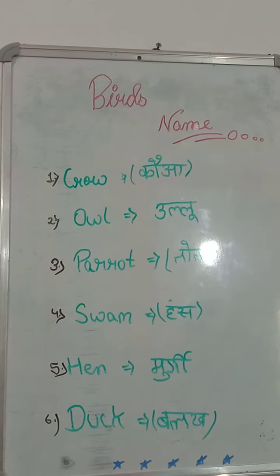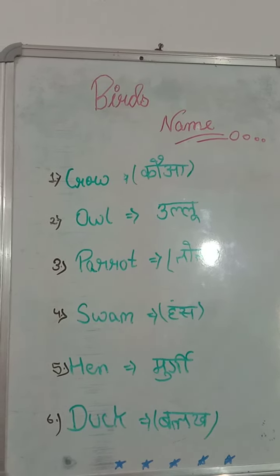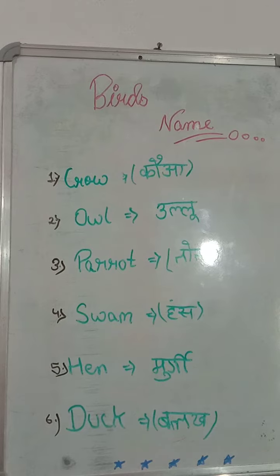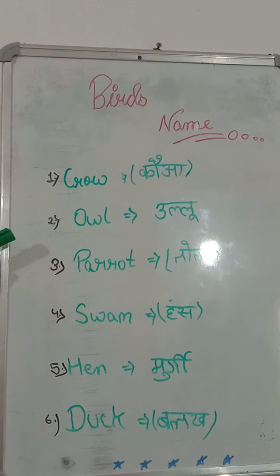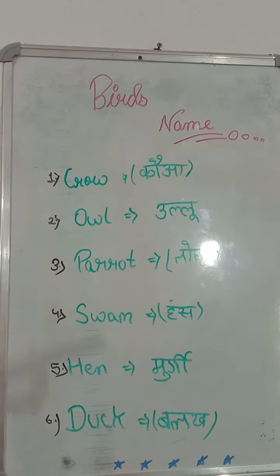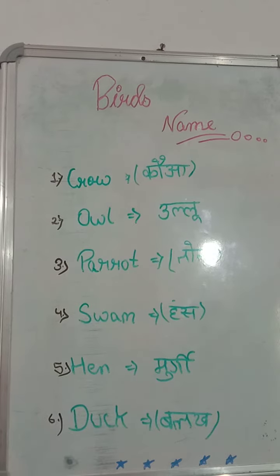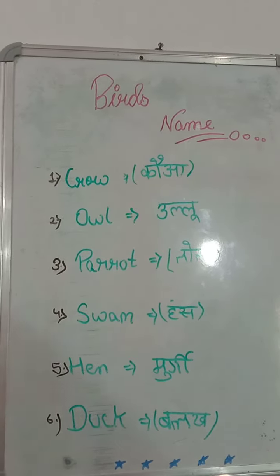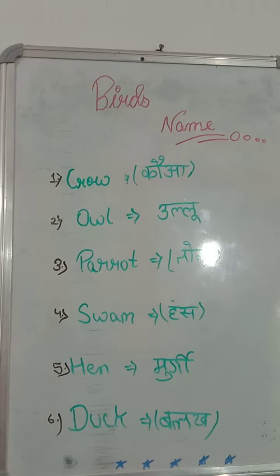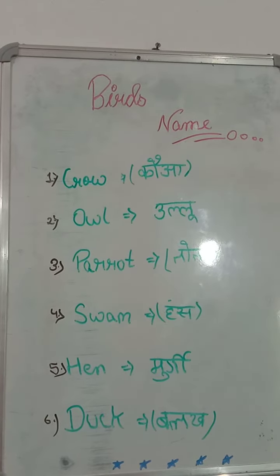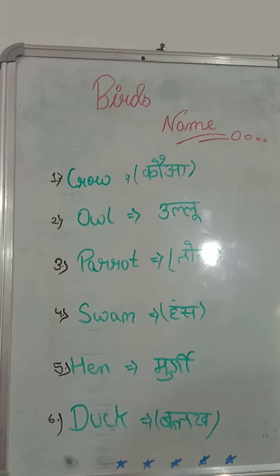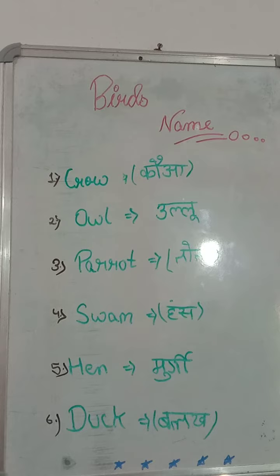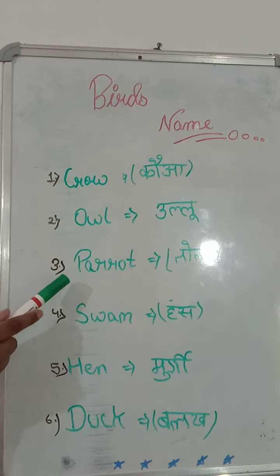Now let's go to the second bird — the Owl. The Owl is one of the birds that can see at night, unlike many other birds that cannot see at night.